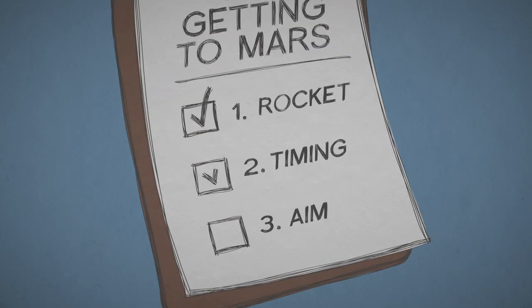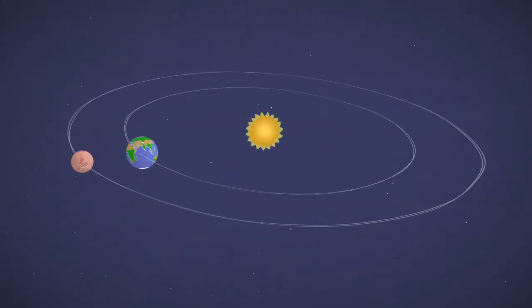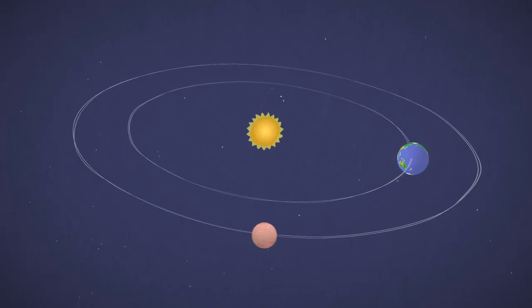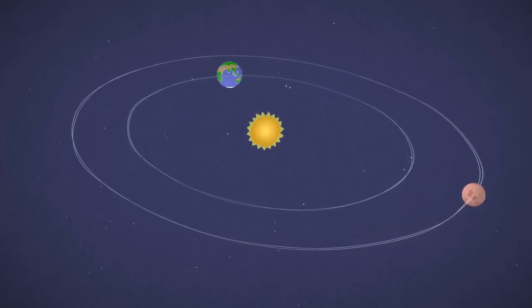Next, make sure you launch at the right time. Mars and Earth orbit the Sun at different speeds and distances. Sometimes they're really far apart, and other times they come closer together.